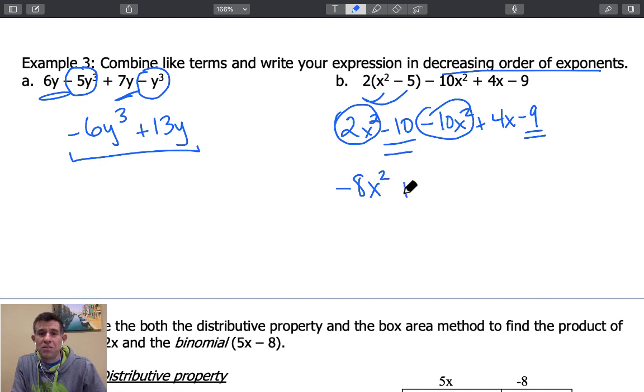So combining these and writing in decreasing order of exponents, I'm going to have a negative 8x squared, positive 4x, and then a minus 19. Again, this is in descending order of exponents. And that's known as standard form.